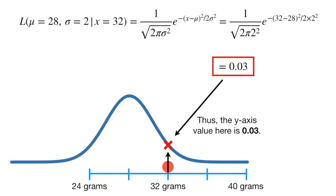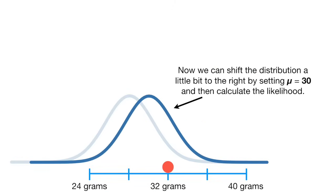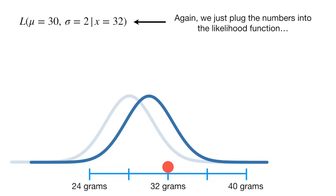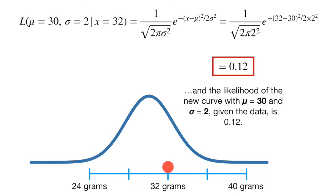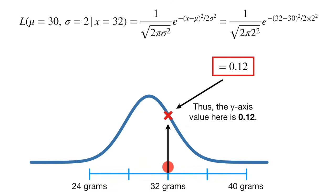Thus, the y-axis value here is 0.03. Now we can shift the distribution a little bit to the right by setting mu equals 30 and then calculate the likelihood. Again, we just plug the numbers into the likelihood function and plug and chug. The likelihood of the new curve with mu equals 30 and sigma equals 2 given the data is 0.12. Thus, the y-axis value here is 0.12.